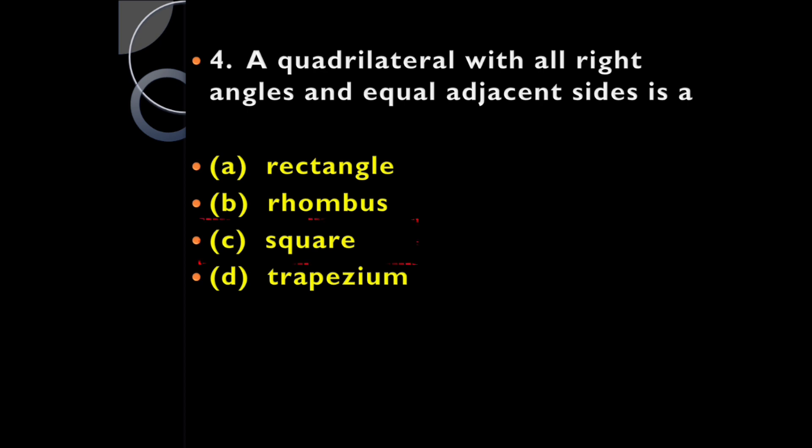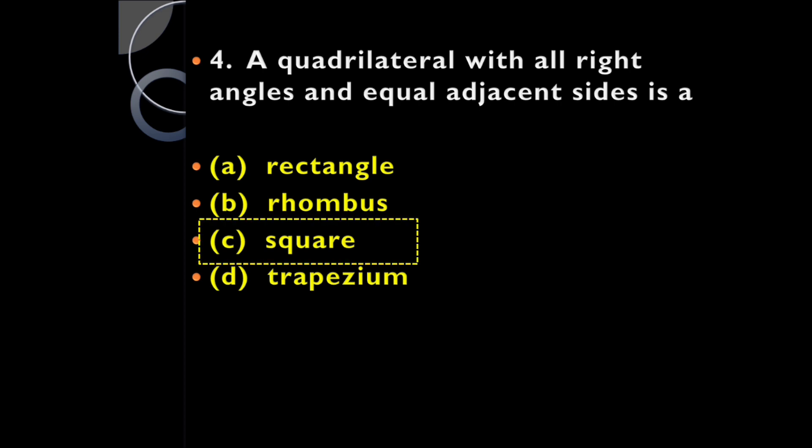It's a square, because a square is a special quadrilateral whose each angle is a right angle and all sides are equal. So equal adjacent sides are also equal, making square the correct option.